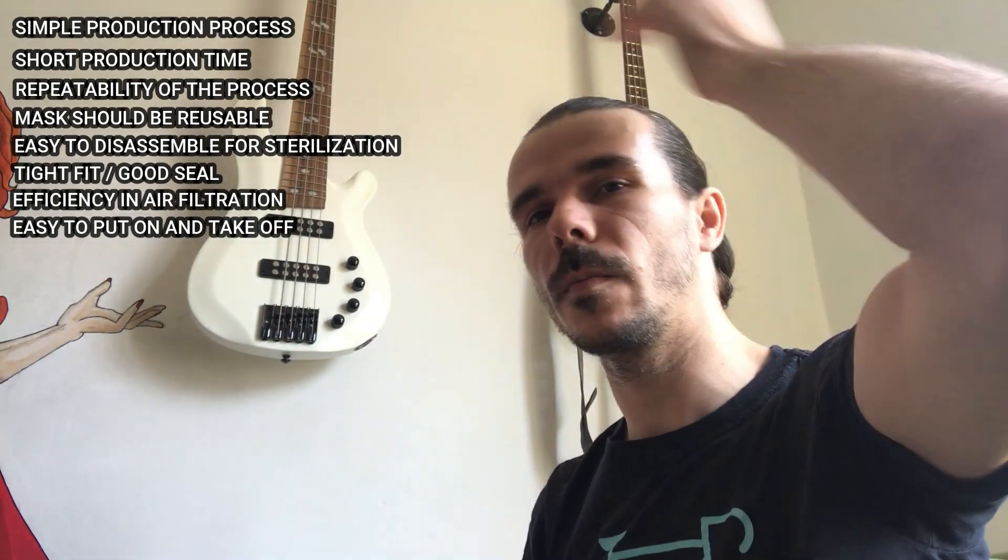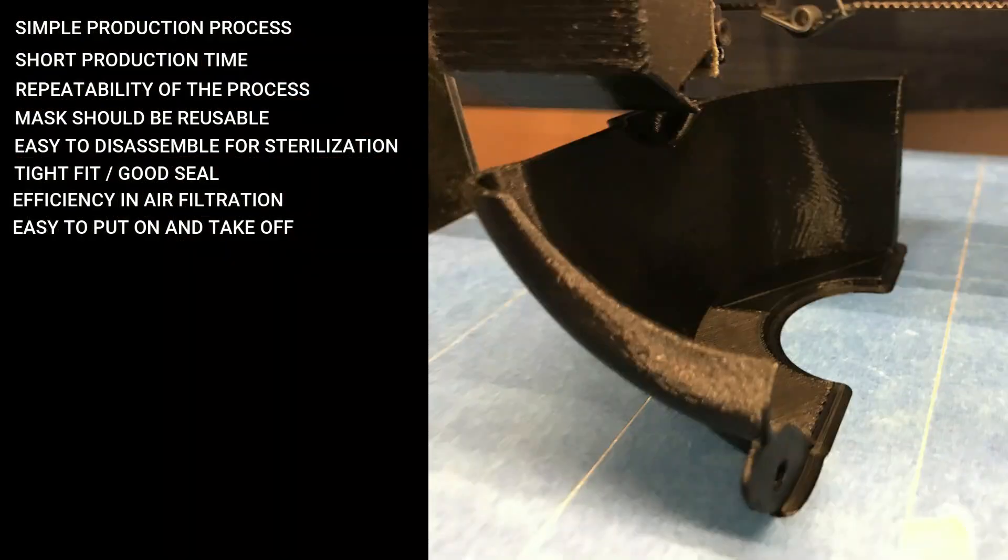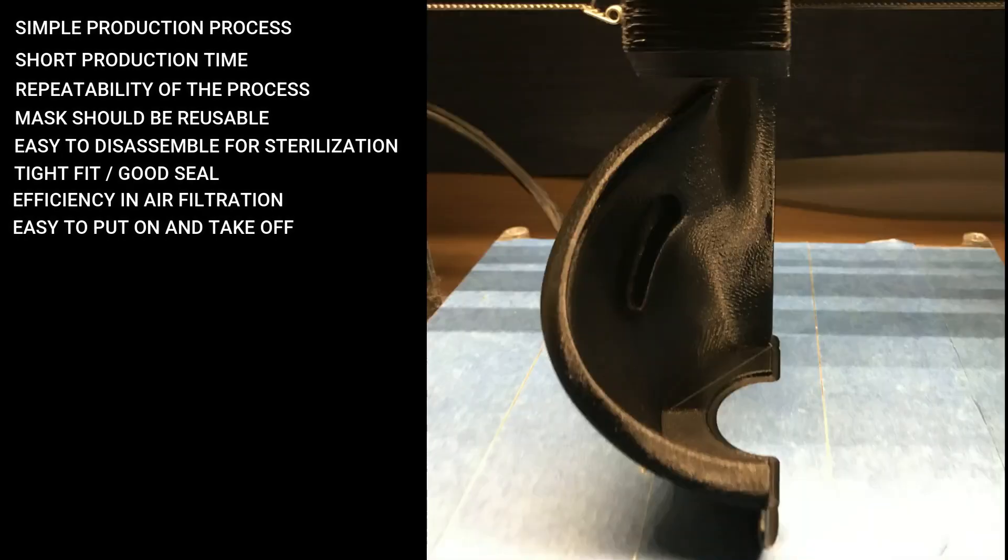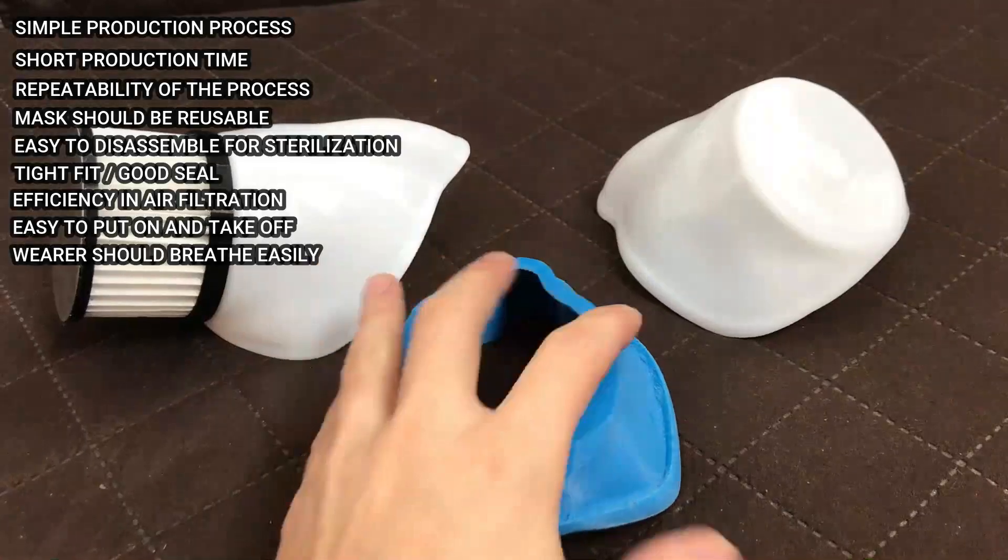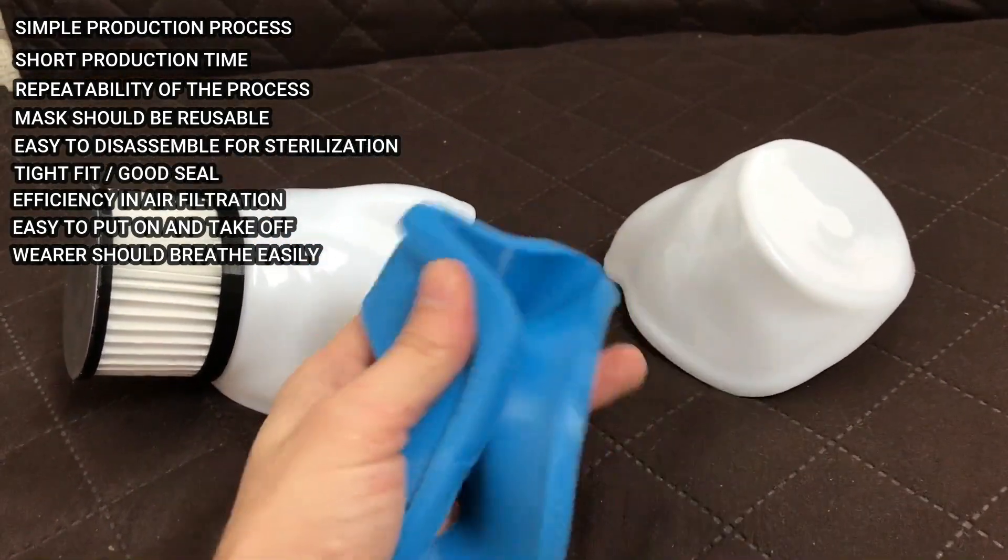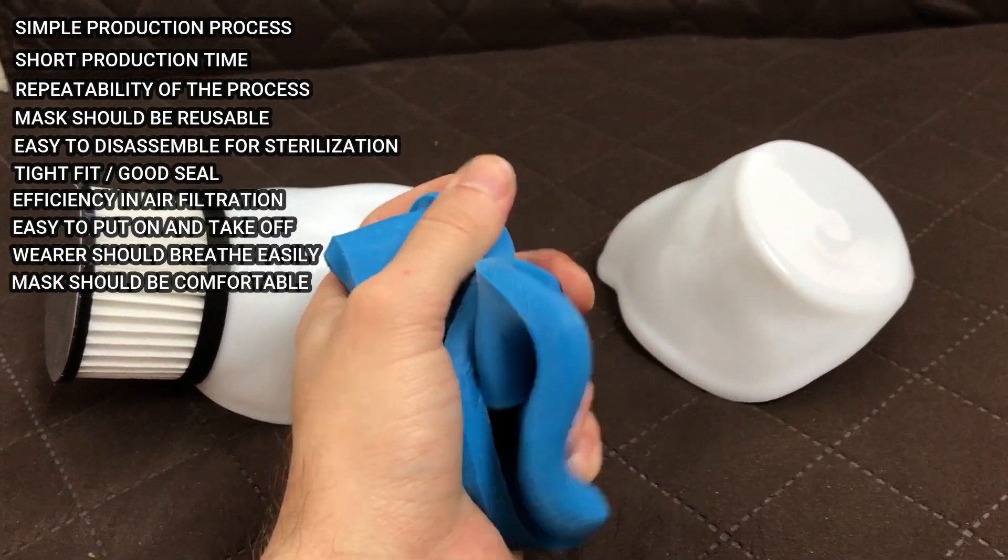Easy to put on and take off. Unlike the N95 masks that need proper fitting, this mask takes the shape of the wearer's face on its own. The wearer should breathe easily. The breathing hole is 36 mm in diameter which should provide enough air circulation. The mask should be comfortable.